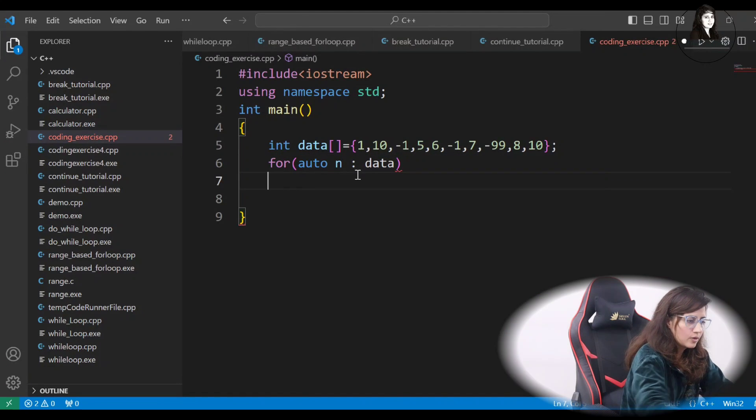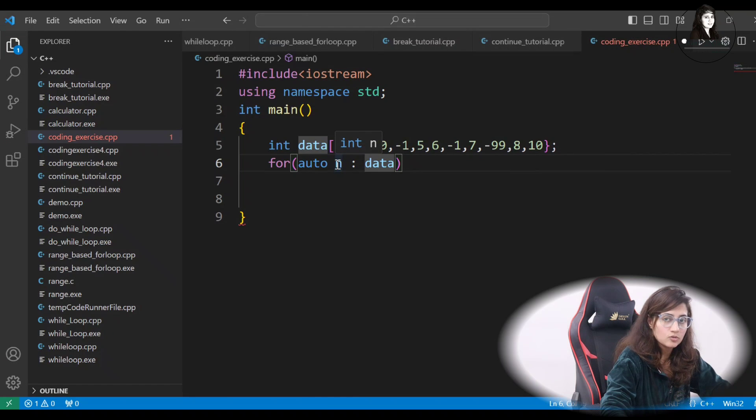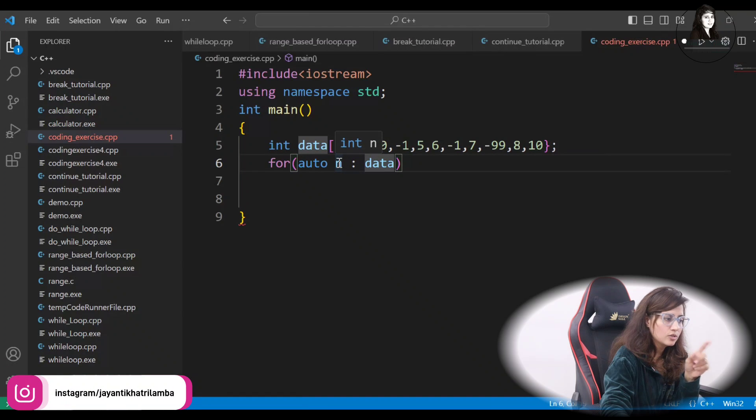So, let data here. So, whatever the data type of this data, this array, automatically that data type would be of this N. So, it is int N. See, whenever you will drag the cursor, move the cursor over N, it is showing you int N. But I am writing auto N.